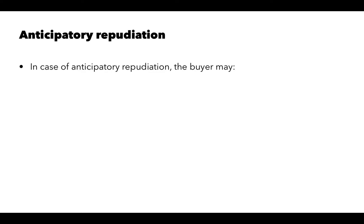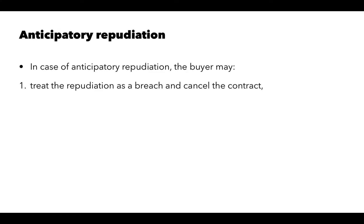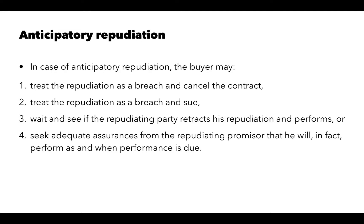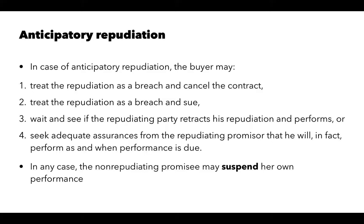Anticipatory repudiation occurs when it appears that the seller is not going to perform. In cases of anticipatory repudiation, the buyer may treat the repudiation as a breach and cancel the contract — returning to its pre-contract position — or treat it as a breach and sue for damages, or wait and see if the repudiating party retracts the repudiation and performs, or seek adequate assurance of performance from the repudiating promisor. In any case, the non-repudiating promisor may suspend its performance.